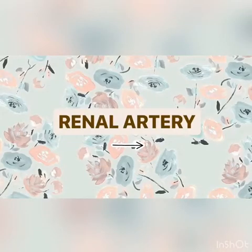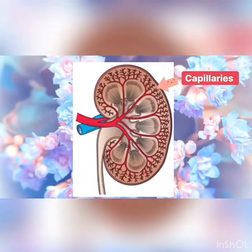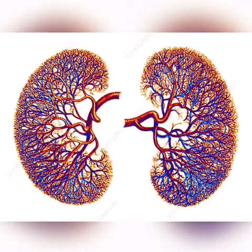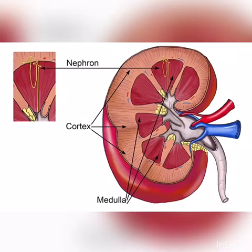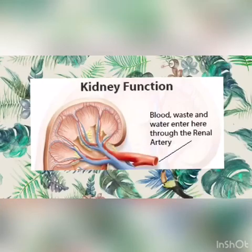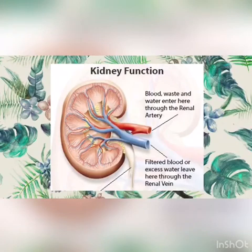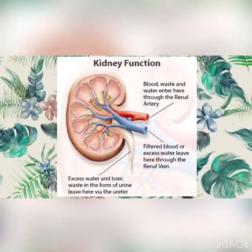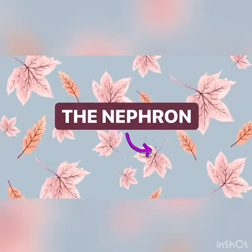The renal artery branches inside the kidney. Each capillary supplies blood to hundreds of thousands of tiny filtration units called nephrons. The renal artery supplies oxygenated blood and nutrients to the kidney, while the renal vein carries away filtered blood to the body. Urine formed in the kidney drains into the renal pelvis.